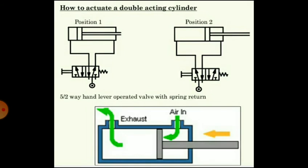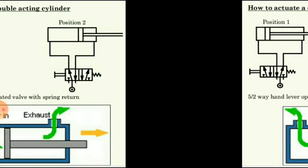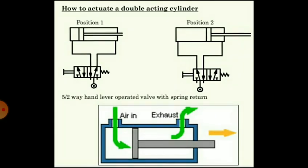To actuate a double acting cylinder: air enters through the piston rod end, forcing the piston backward — this is the retraction stroke — while compressed air at the piston end exits. When the valve is activated and its position changed, air enters through the piston end, forcing the piston forward, while compressed air at the piston rod side exhausts. This operation can also be followed in a circuit diagram.